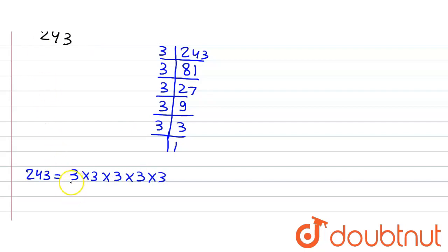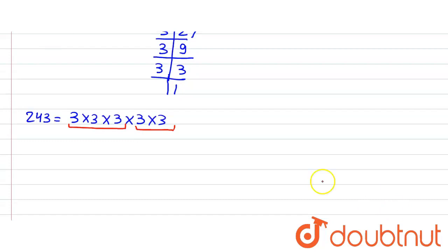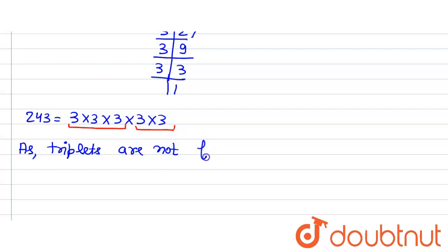Now we will check how many triplets are formed. Here we can see that three 3s make one triplet, but a complete second triplet is not formed. For a number to be a perfect cube, every prime factor must form a triplet. Since that is not the case here, therefore 243 is not a perfect cube.